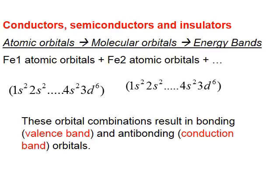We will now discuss conductors, semiconductors, and insulators based on the valence band and conduction band. First, we discuss the origin of the valence band and conduction band. Consider iron atoms with electronic configuration 4s², 3d⁶ in the outermost orbitals. When iron atoms come close to each other, their orbitals overlap. Each time there is an overlap, there will be two types of combinations.